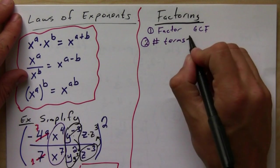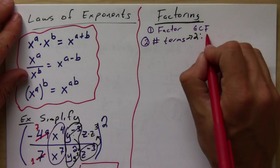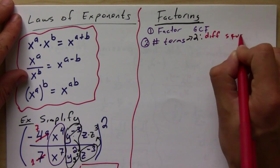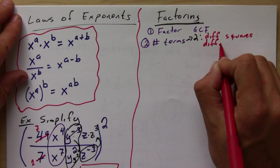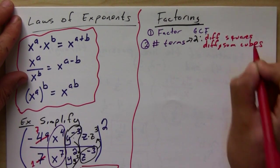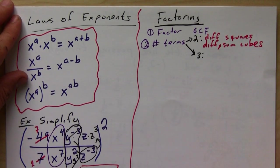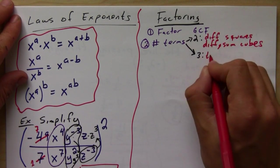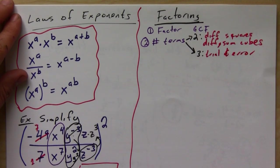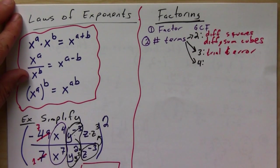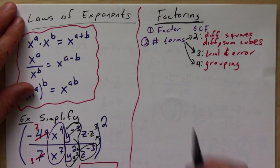If you have two terms, then that means it's either going to be a difference of squares or a difference or sum of cubes. If you have three terms, the easiest way is to factor by trial and error. And if you have four terms, almost always it's going to be factoring by grouping. Alright, so let's do a quick example of each one of these.